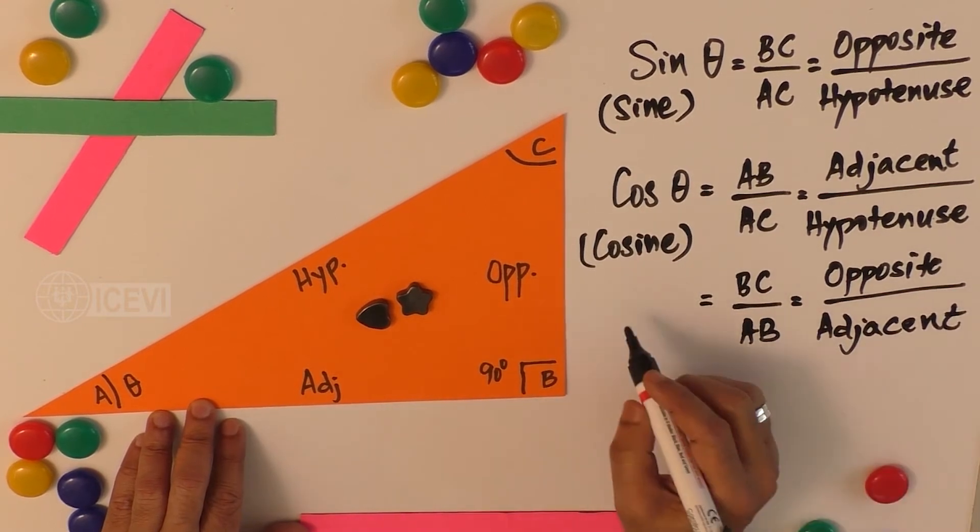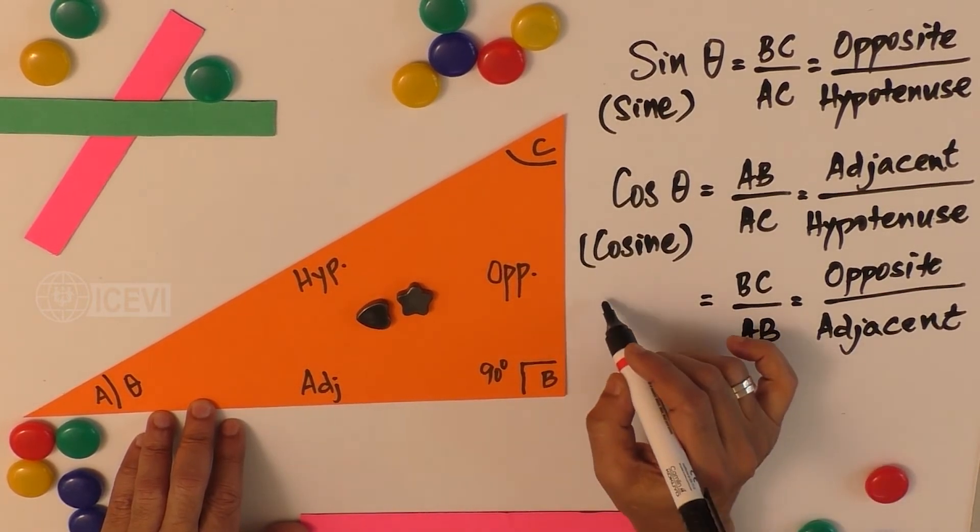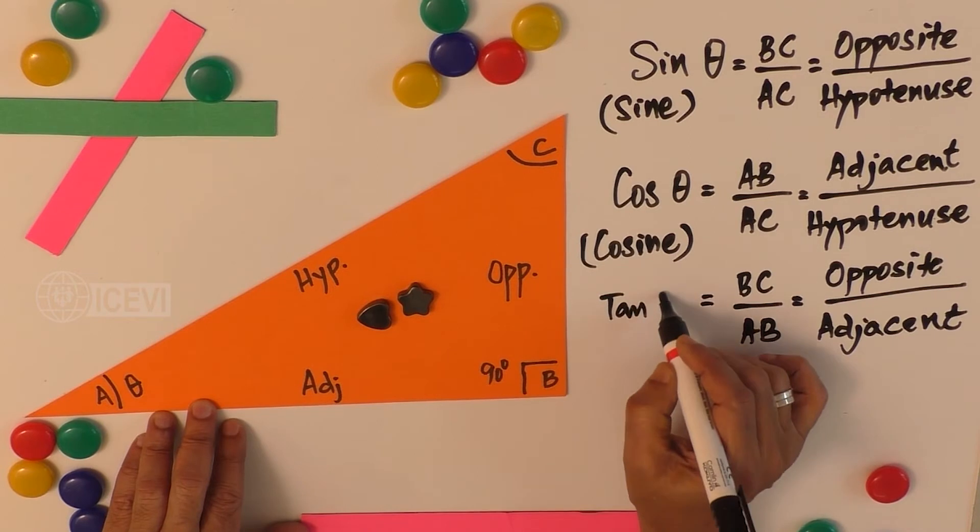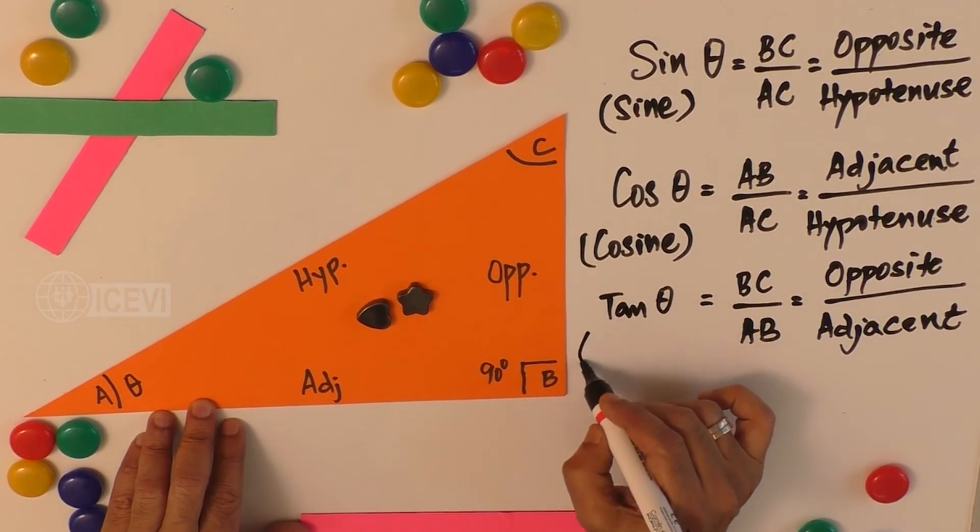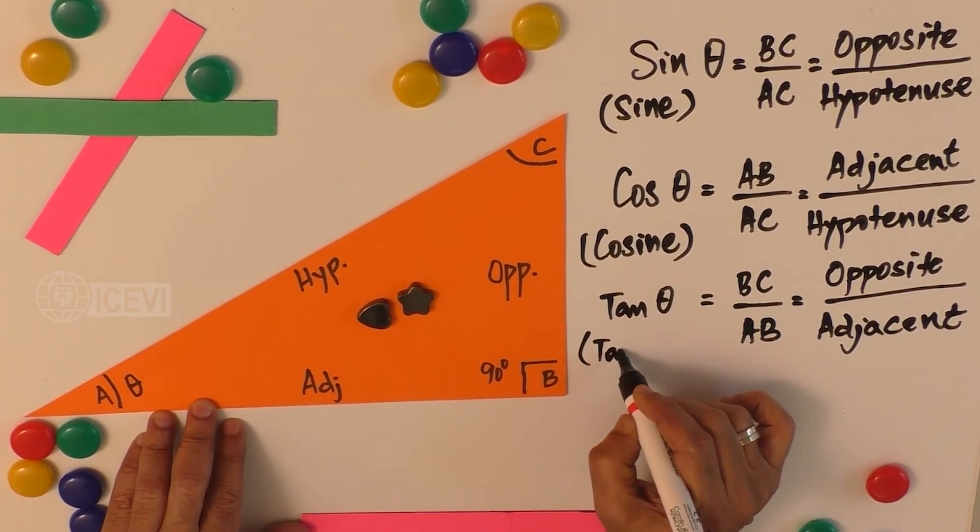So this is called as tan theta. The full form is tangent.